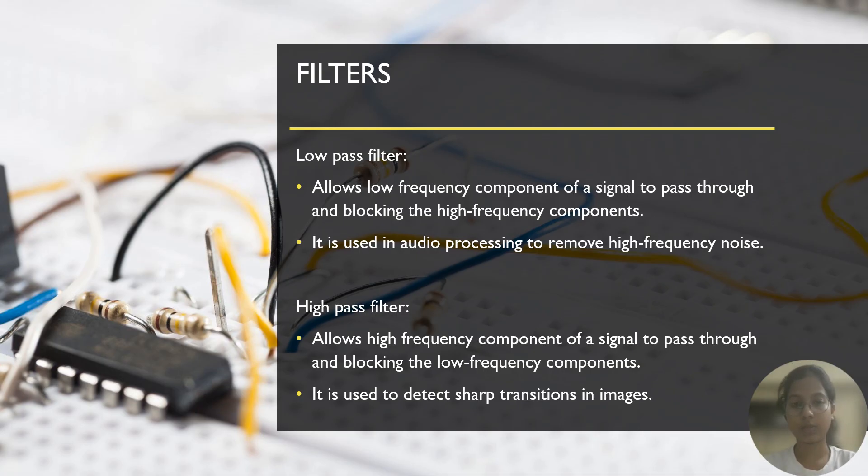Low-pass filter and a high-pass filter. Low-pass filter allows low-frequency components of a signal to pass through, and blocks the high-frequency components of the same signal. It is used in audio processing. Like we have mentioned in noise cancellation, it will actually cancel out all the high-frequency noise.